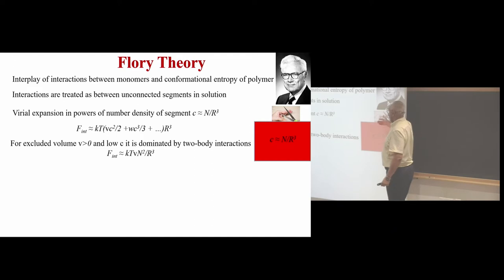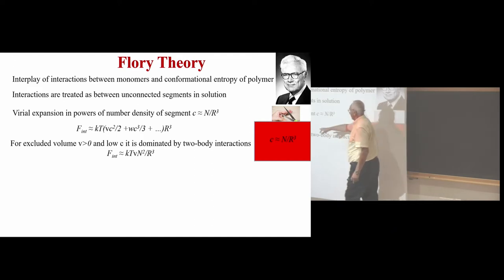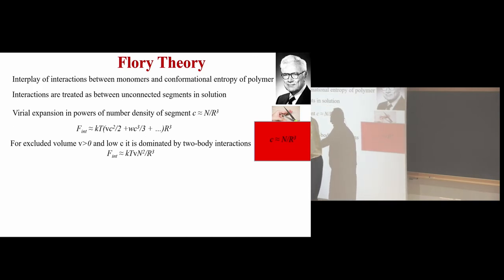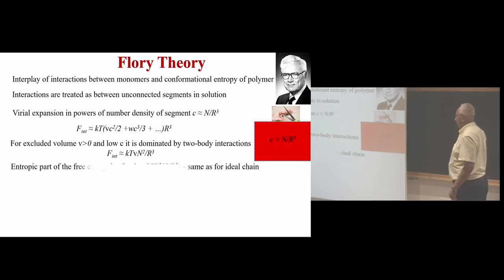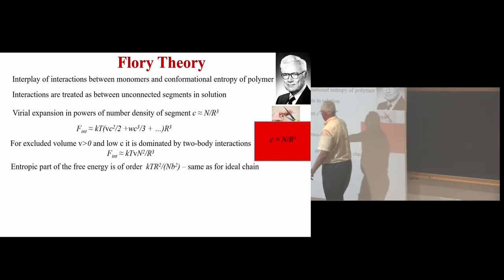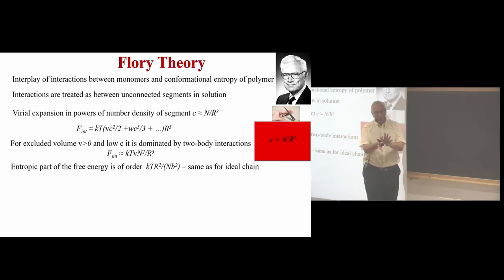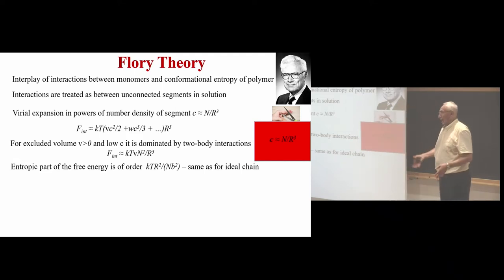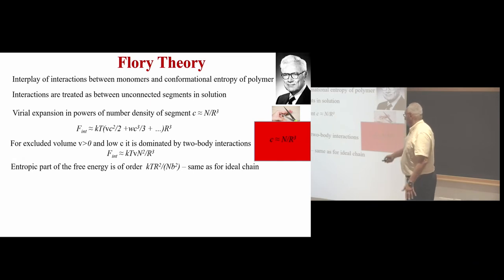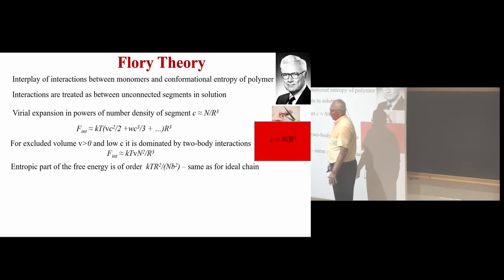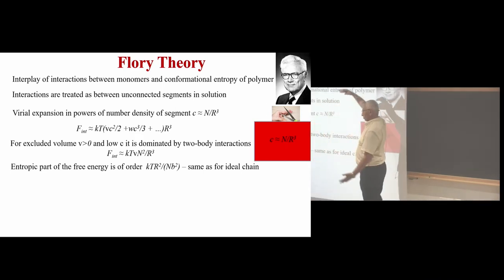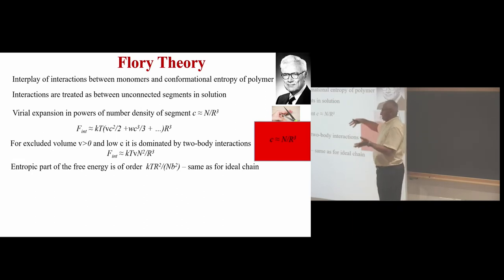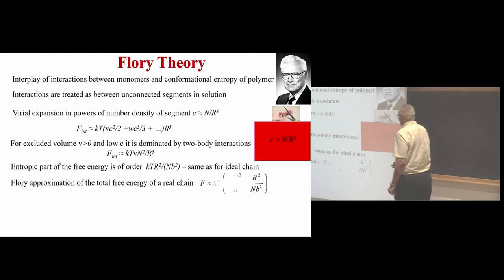In addition to energetic interactions, the chain — because it's connected — has its own conformational free energy. It wants to be as close to ideal as possible. From the Gaussian we discussed, this entropy term tells you how much the chain hates swelling or stretching. It's proportional to how much bigger its size is compared to its happy size, times kT. There are two terms in balance: energy wants C to be as small as possible, meaning the chain should swell so the probability of contact is very low; entropy wants to be as close as possible to Gaussian.